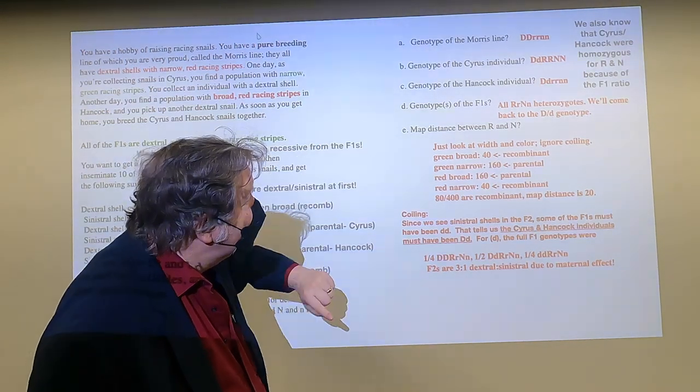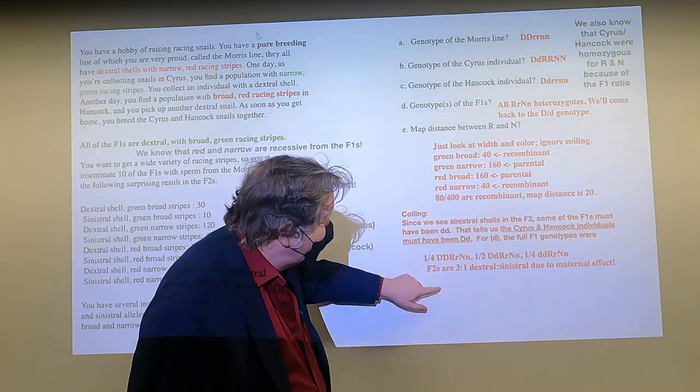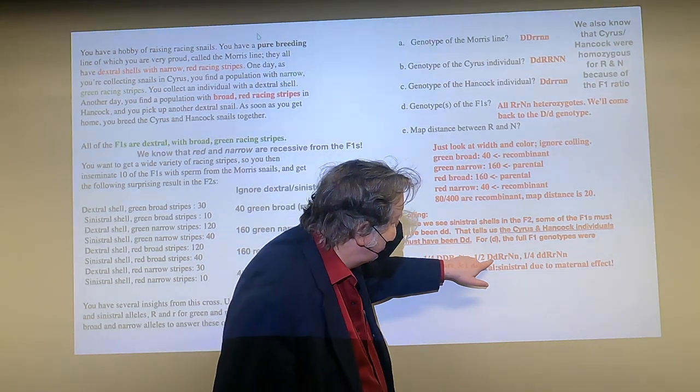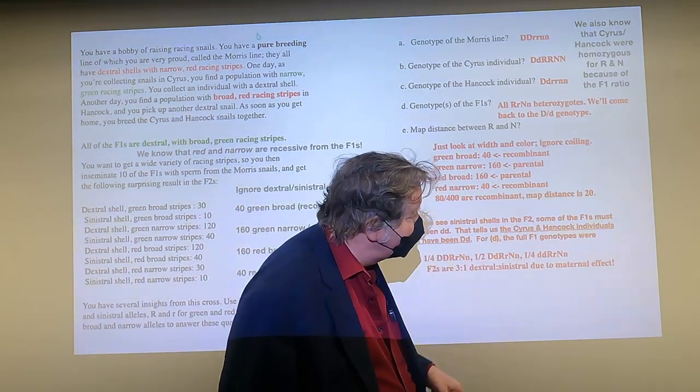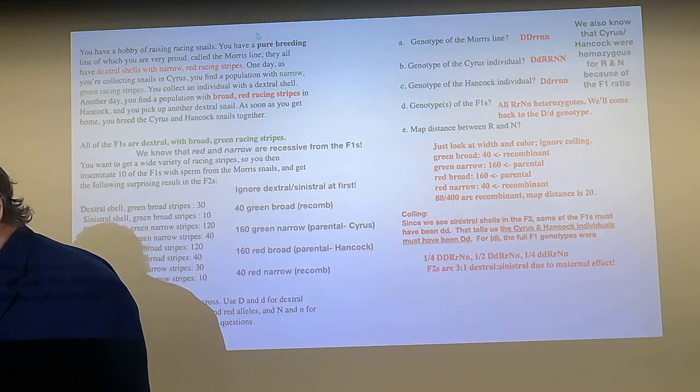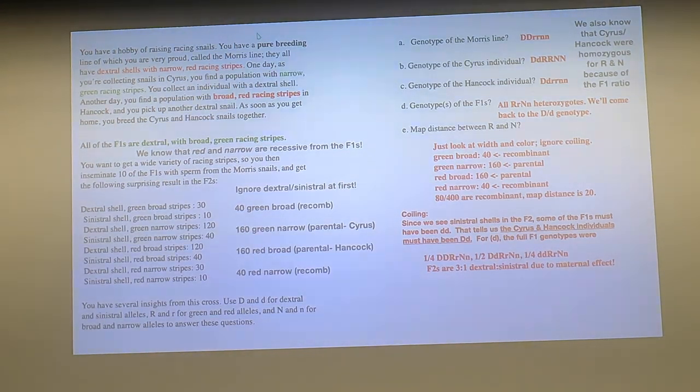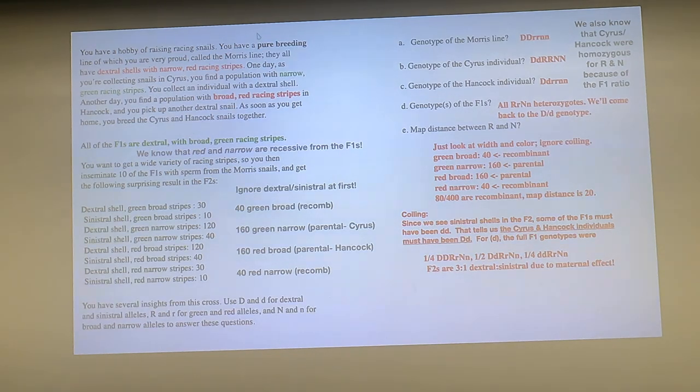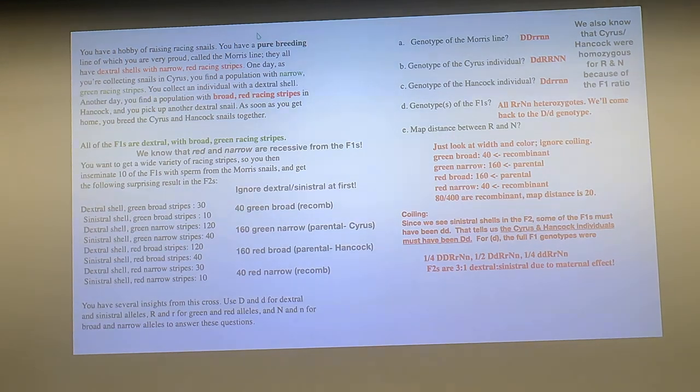Here's the full genotypes. They are all big R, little r, big N, little N, but a quarter had to be big D, big D, half big D, little D, and one quarter little d, little d. And all the progeny of these will be sinistral coiling. The key to this was you gotta split out the maternal effect from all the other stuff. Figure out the other stuff, and then it's just a simple dihybrid cross. Then you add in the coiling. This is one of the nice things about a lot of these genetics problems - you break them apart into pieces, solve the pieces individually, and then bring them back together again.